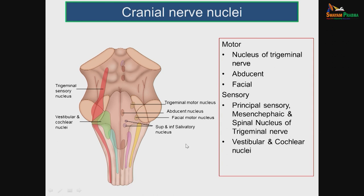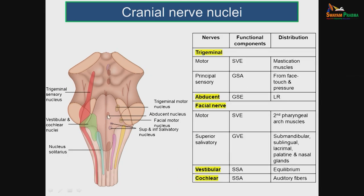Now let us review the cranial nerve nuclei present in the pons. The motor nuclei are: the motor nucleus of the trigeminal nerve, the abducent nerve nucleus, and the motor nucleus of the facial nerve. The sensory nuclei are: the principal sensory nucleus of the trigeminal nerve (extending from medulla through pons to midbrain), and the vestibulocochlear nuclei (predominantly in the pons with some extent into the medulla).